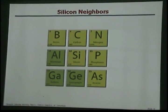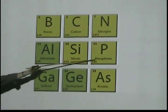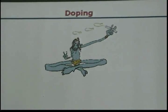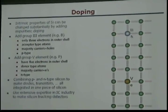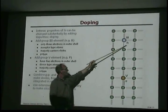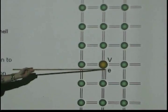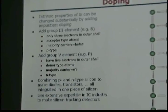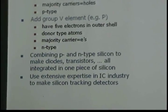Now, we can do some magic with silicon. Silicon has neighbors that have one electron less or one electron more in their outer shell, and we can dope it. What we can do is put a group-3 element into the silicon lattice that naturally has one electron missing. When we do that, we change the electrical characteristics of silicon completely. This is how we make diodes, this is how we make transistors, and it's all integrated in one piece of silicon.